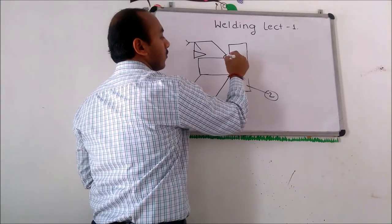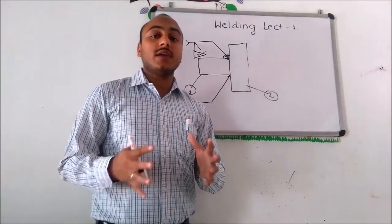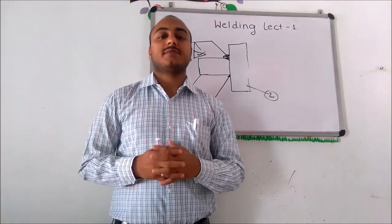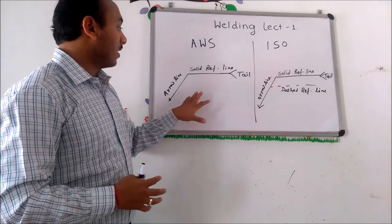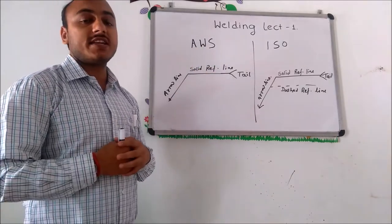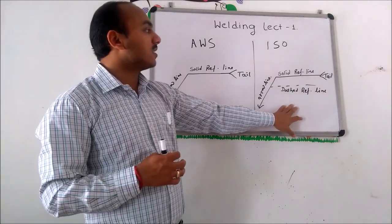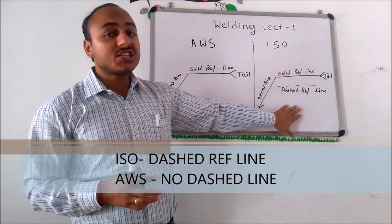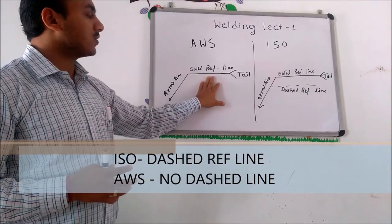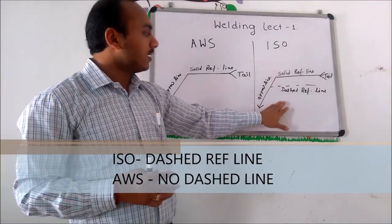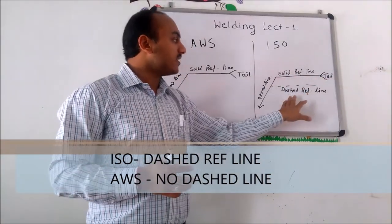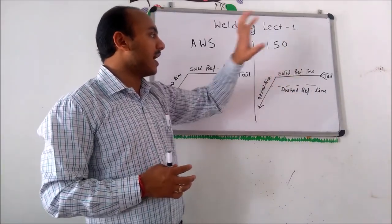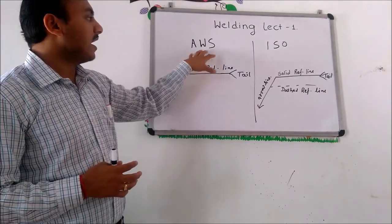Based on strength requirement we can use these symbols to join the two components. Here is the representation of a symbol by AWS, that is American Welding Society, and this symbol is based on the International Organization of Standards. Mostly both are the same. This is the arrow line, this is a solid reference line, and there is a tail. There is also a dash reference line in the ISO standard, but there is no dash line in the AWS standard.